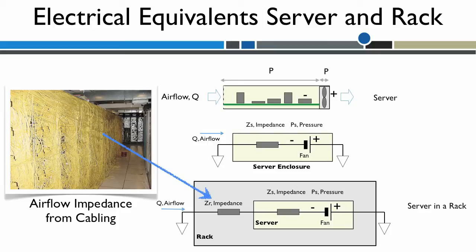The fan in the server has to overcome this additional impedance to deliver adequate air flow required to cool the server. If the additional impedance is high, the small fan may not be able to deliver enough air flow and this can lead to overheating of the server.